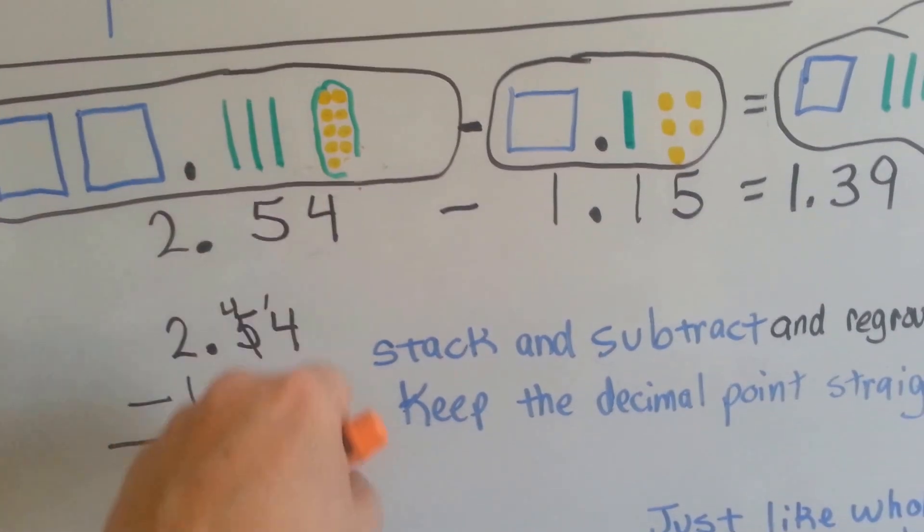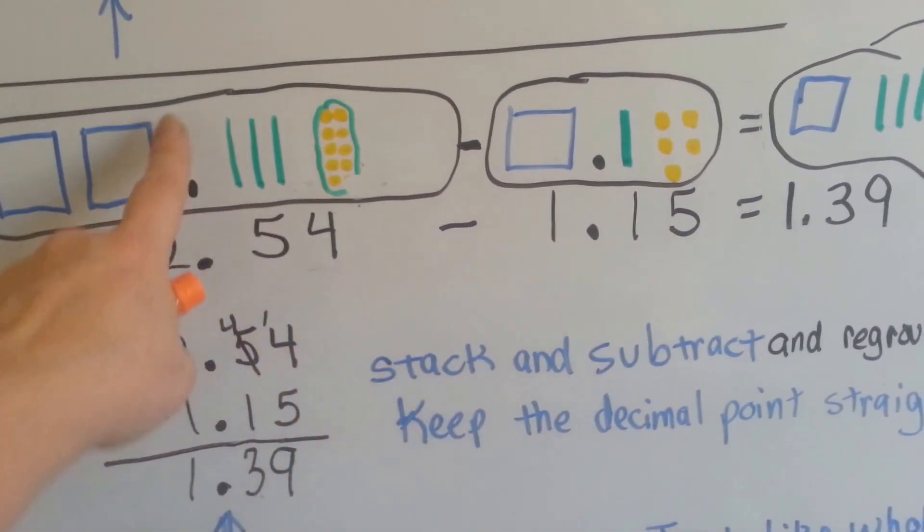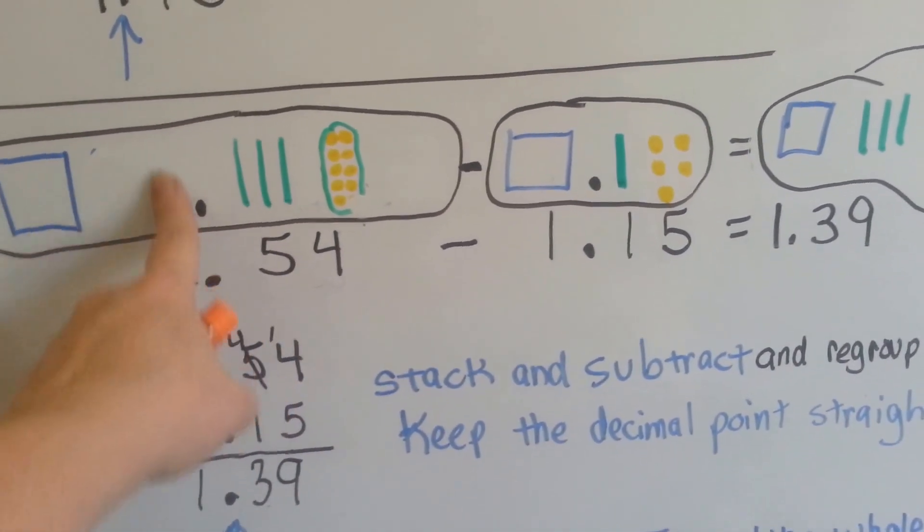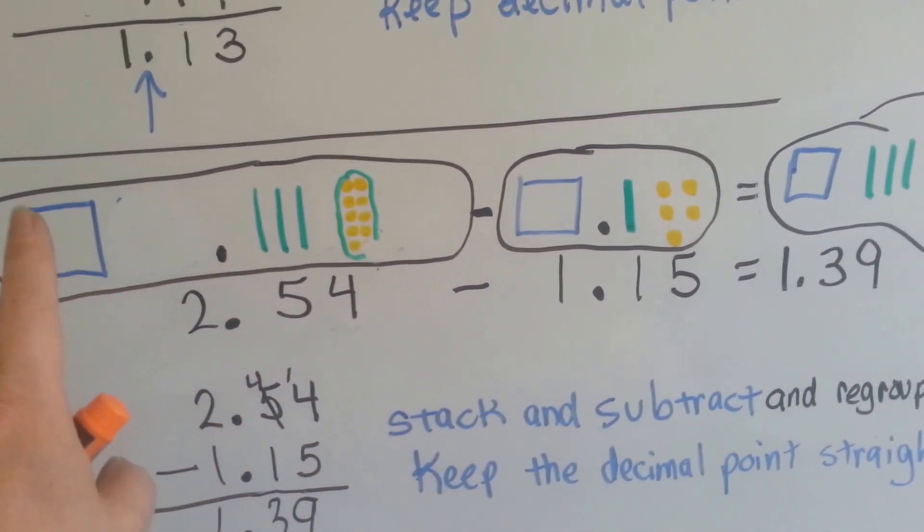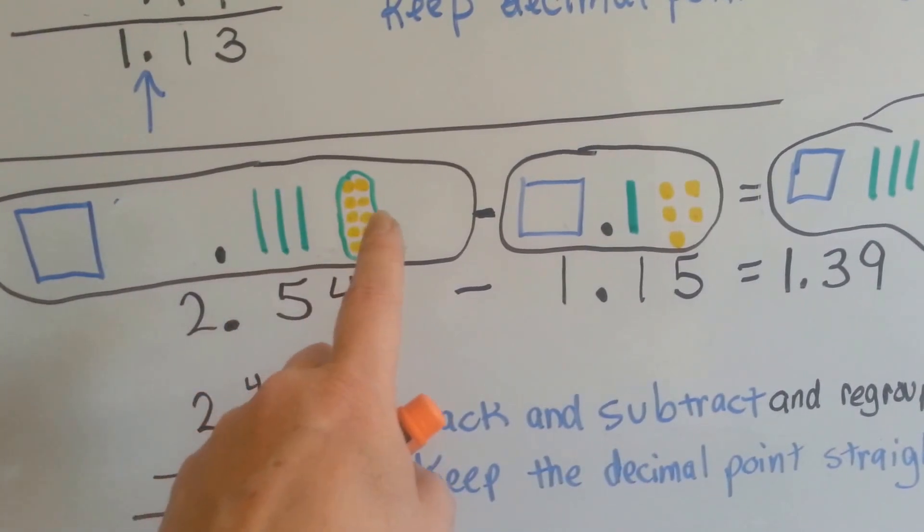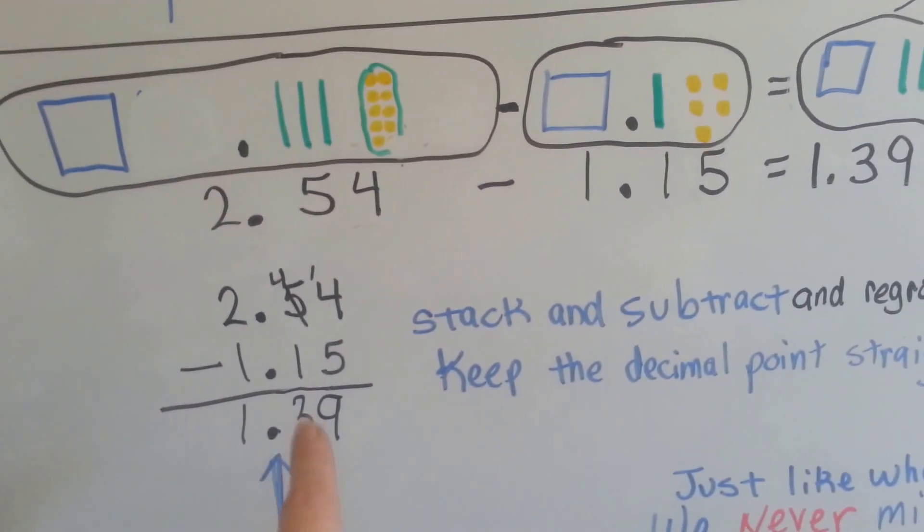And we would take one of the green ones away. And we would take one of these blue ones away. Then we would have taken away one blue, one green, and the five yellow. And we would end up with one and three and nine. One, three, and nine.